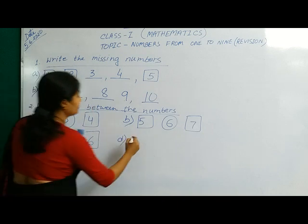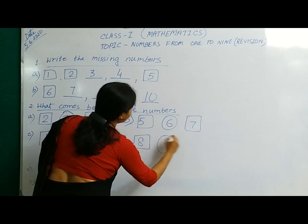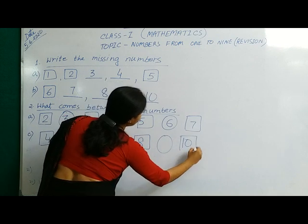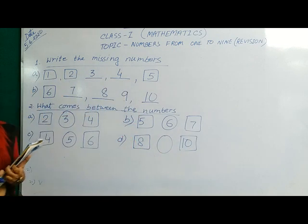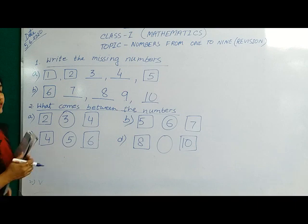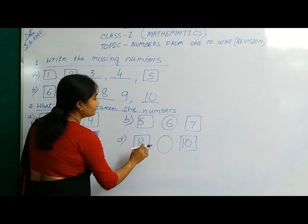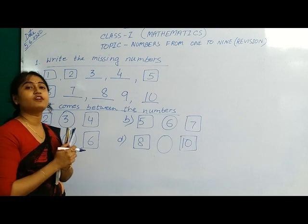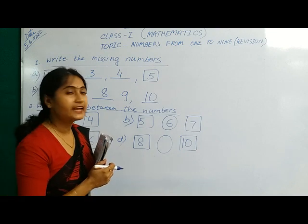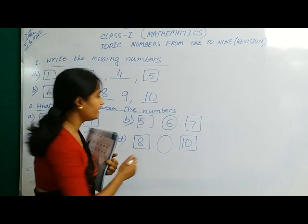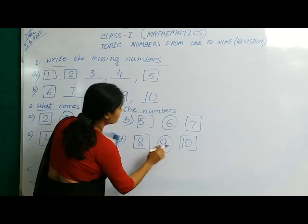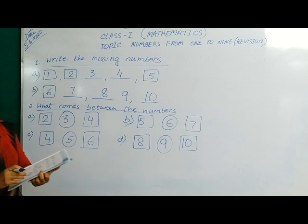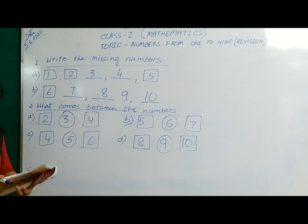Next number. D. 8 and 10. Then, what comes between 8 and 10? After 8, what comes after 8? After 8, 9. And what comes before 10? 9. This is the between number. So, you will practice in this way in your home also.